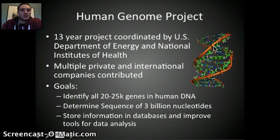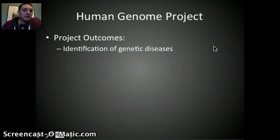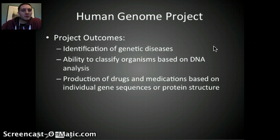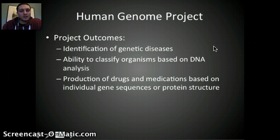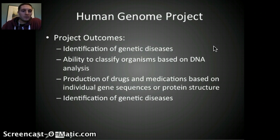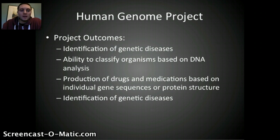Additional goals included storing information in databases and improving tools for data analysis. From the information obtained, we've been able to identify genetic diseases, classify organisms based on DNA analysis, and produce drugs and medications based on an individual's gene sequence or protein structure — essentially tailoring medication specific to an individual based off of their gene sequences. The process of the Genome Project took quite a few years to complete, but today sequencing can be done in weeks or even days depending on cost. We'll look at some of these topics further in class and in our second video.